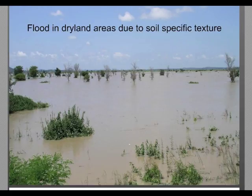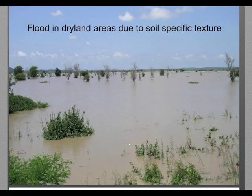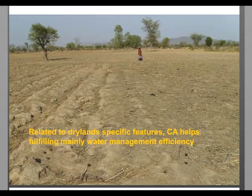These pictures show that in dryland areas, due to specific soil structure and texture, it is common that extreme rainfall results in frequent flooding when the slope is weak. When the slope is not weak, you will have runoff or erosion, but when the slope is weak, it results in flooding — a typical contradiction in dryland areas. The next slide focuses on how water efficiency is organized with CA.